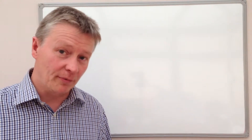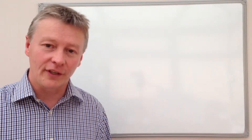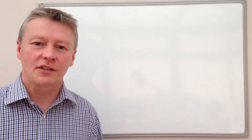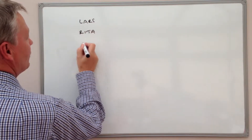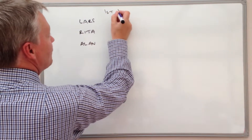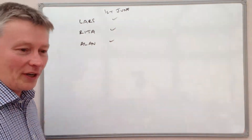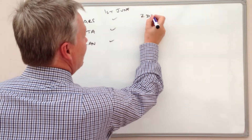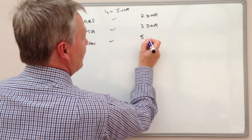This particular question deals with three people who go swimming on a fairly regular basis. It's around level C to level B at GCSE. It basically concerns three people: one's called Lars, one's called Rita, and one's called Alan. They all go swimming together on the 1st of June. Lars goes every two days, Rita goes every three days, and Alan goes every five days.